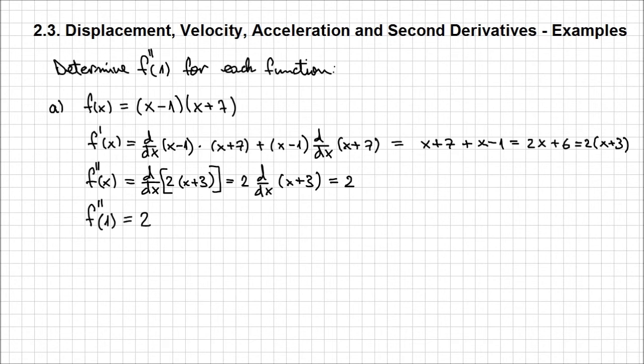So basically for any value of x from the domain of the function, which is coincidentally the set of real numbers, it's going to have the value of 2. So it's a constant. Regardless of what value you give to x, the second derivative for this function is always going to be 2.